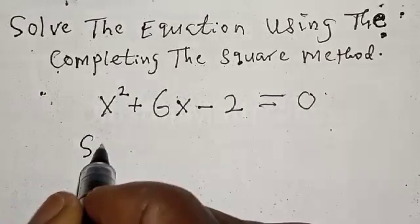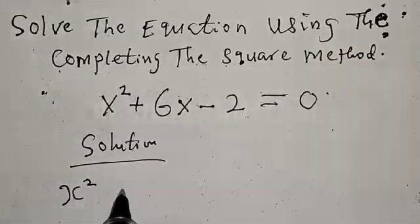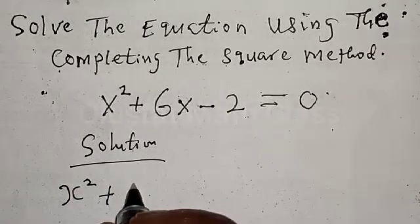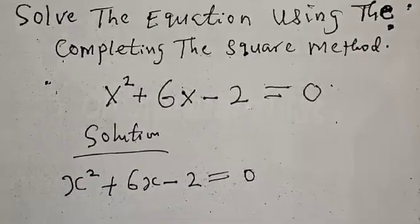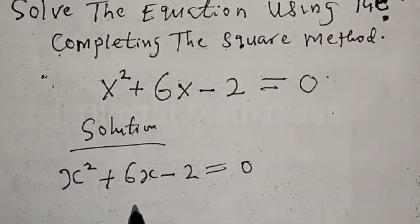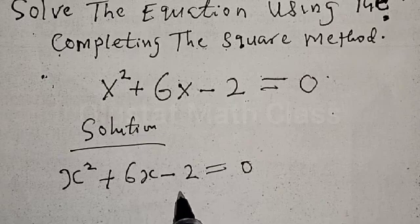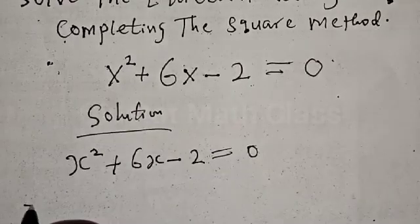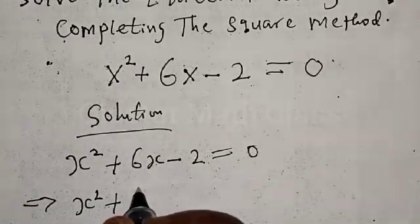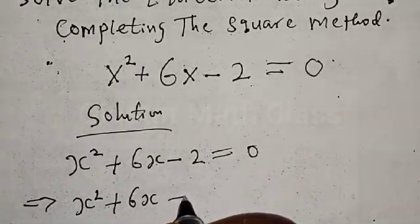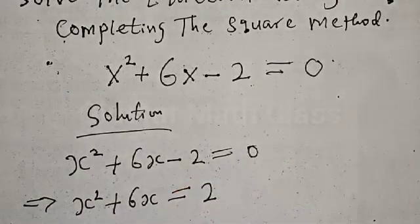Solution. We have x squared plus 6x minus 2 is equal to 0. In solving this equation, we could have used the factorization method, but this equation is not easy to factorize. That is why we have to use the completing the square method. This implies that we have x squared plus 6x is equal to 2, because the minus 2 moves to the other side and becomes plus 2.